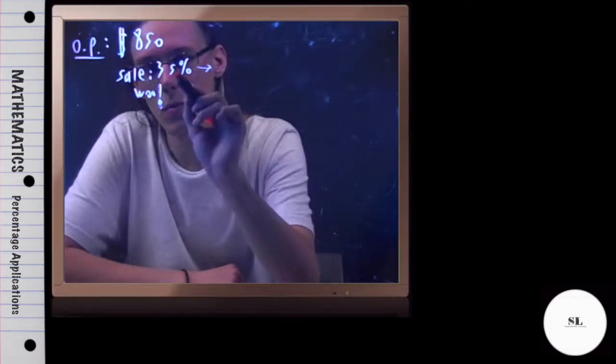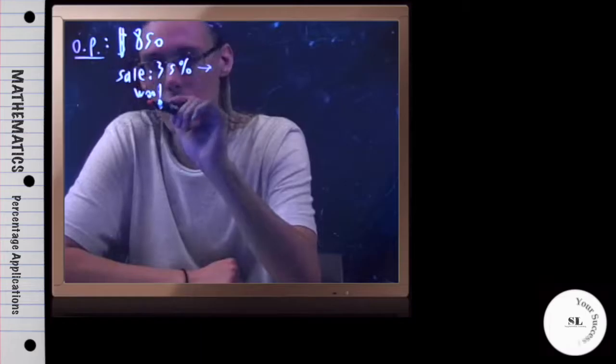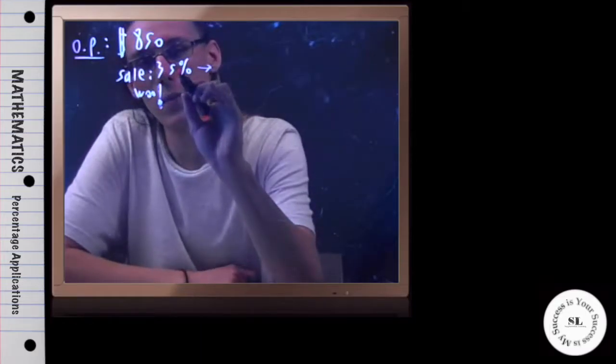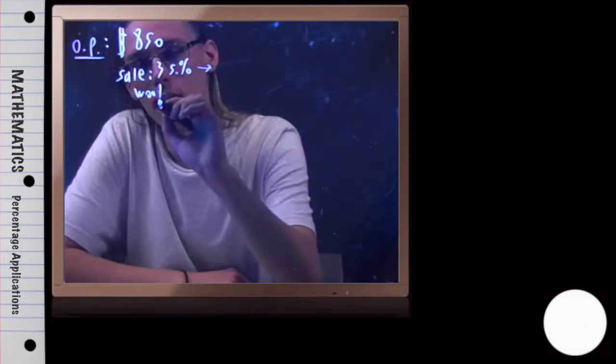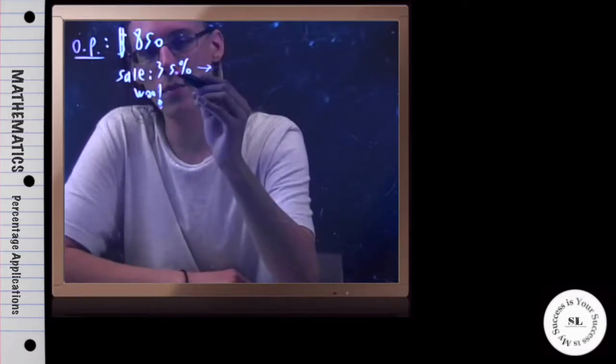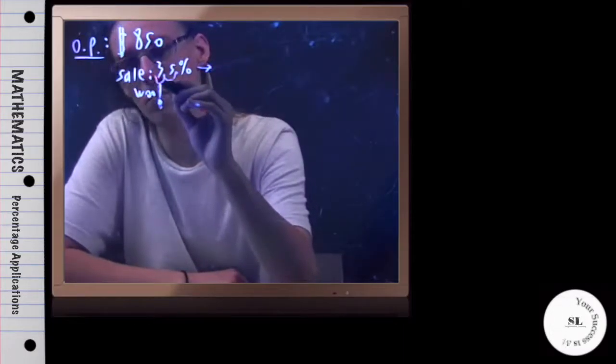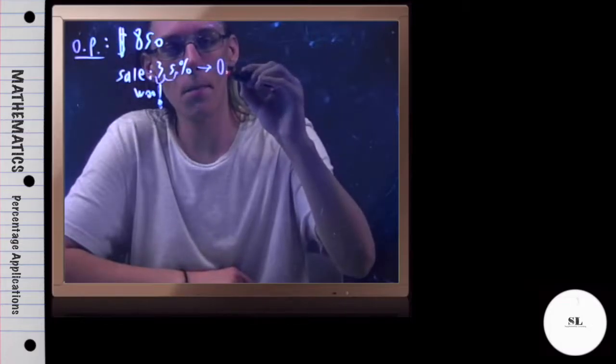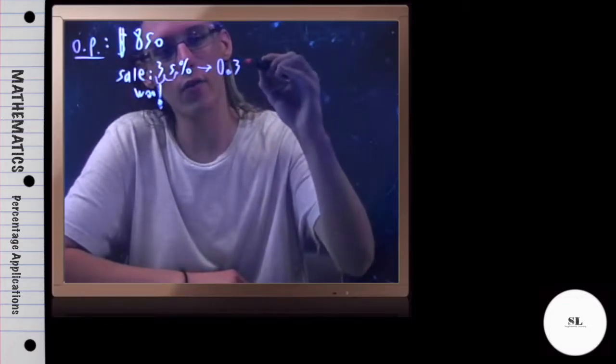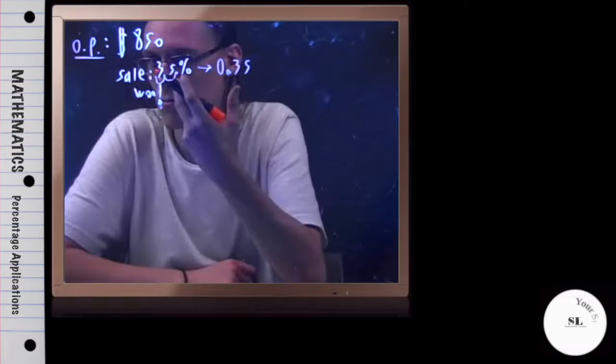Now where is the decimal point if they don't write it? Well, they put it right here at the end. So if I move two hops to the left, 35%, that's going to be .35. And you can put the zero there or not, it doesn't make a difference.